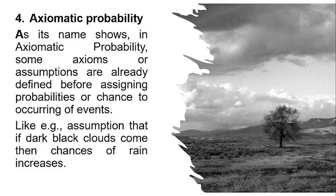The last one is axiomatic probability. As its name shows, in axiomatic probability some axioms or assumptions are already defined before assigning probabilities or chances to the occurring of events. For example, the assumption that...